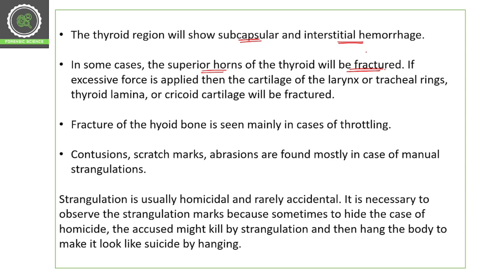In case of violent strangulation, the superior horns of the thyroid cartilage may be fractured. If excessive force is applied, the cartilage of the larynx, tracheal rings, thyroid lamella, and other cartilages will be fractured as well. Fracture of the hyoid bone is seen mainly in cases of throttling.